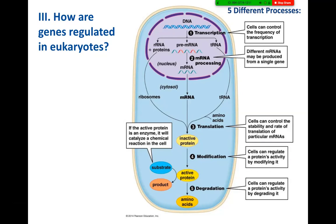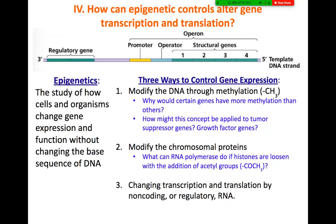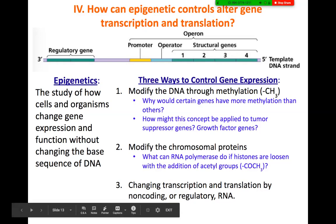It gets even more interesting than just these five mechanisms. There is also something called epigenetic controls, which modern science — particularly in the field of genetics — has uncovered. These are mechanisms in which genes can alter the transcription and translation process, controlling how much and which portion of the DNA gets expressed. Epigenetics is defined as the study of how cells and organisms change gene expression and function without changing the genetic sequence of the DNA.